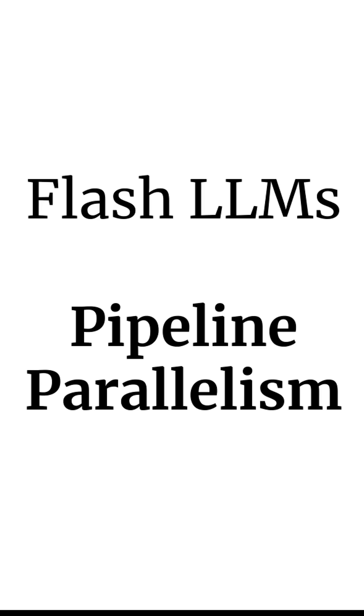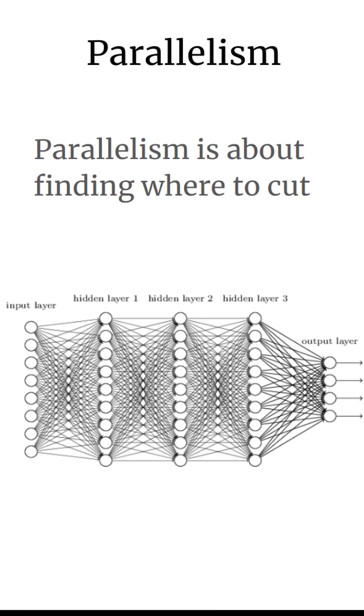Let's talk about neural network pipeline parallelism. When parallelizing a neural network, the main decision is where to cut. That is, how do we take our computations and spread them out onto our devices?